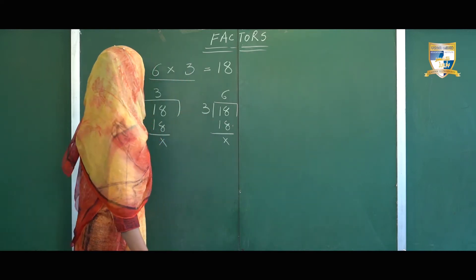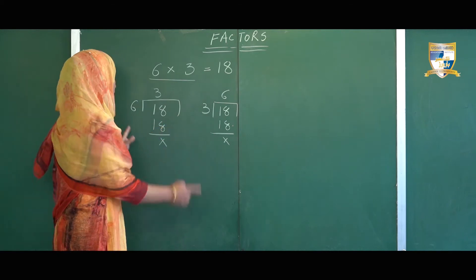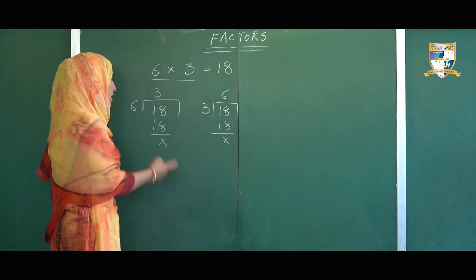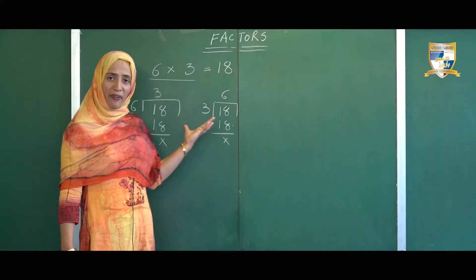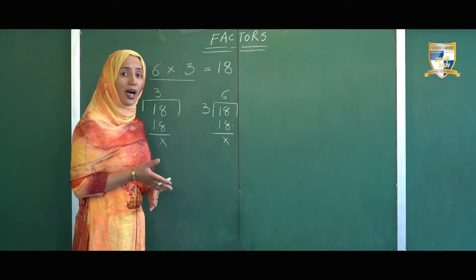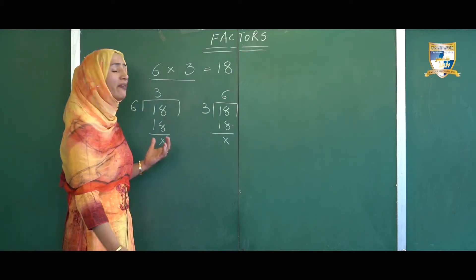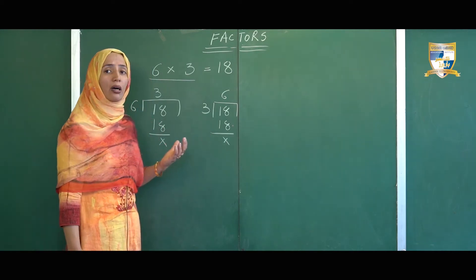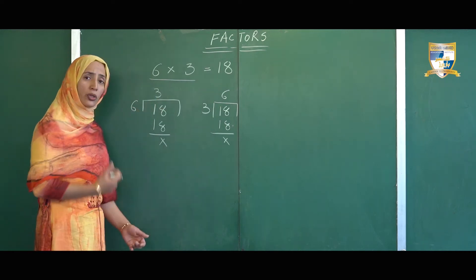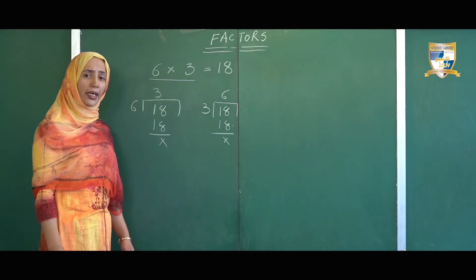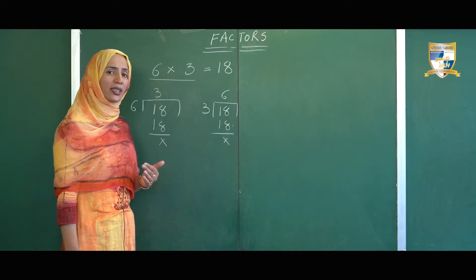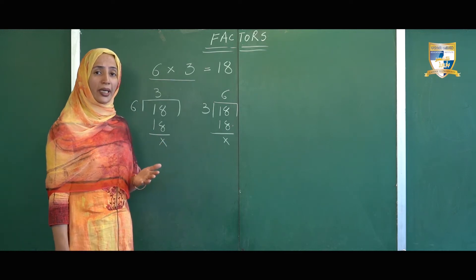So what are factors? Factors are numbers that divide another number exactly without leaving any remainder. Here 6 and 3 are the factors of number 18 because 18 is exactly divisible by 6 and 3. Now the question is: are 6 and 3 the only two factors of number 18? Exactly not — let's find out all the other factors of number 18.